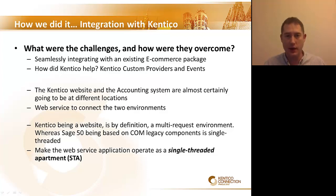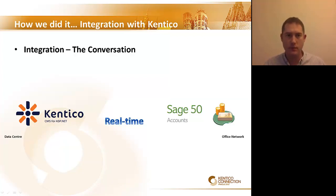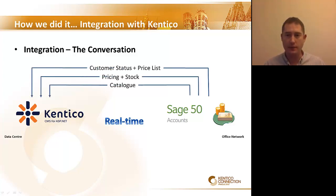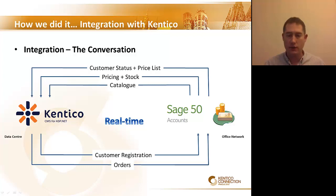This can now be implemented quickly as all the challenges have been overcome. The integration involves a two-way conversation: there's data that needs to be retrieved from the accounting system at various points, and data that needs to be sent to the accounting system. Retrieving the data — on customer login, the customer status, pricing, stock and catalogue needs to be returned from the accounting system. Updating the data — for example on customer registration, the updated customer details need to be sent to the accounting system. Also, when placing an order, the order details will also be sent.